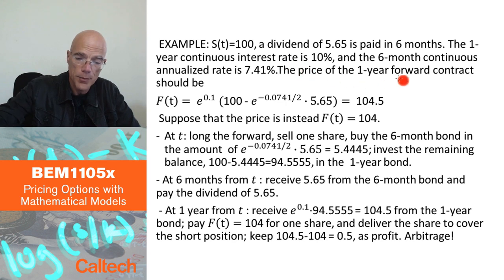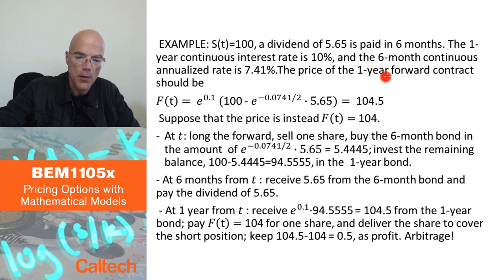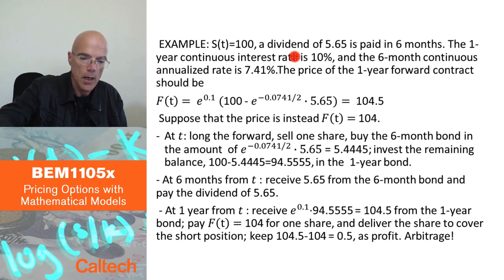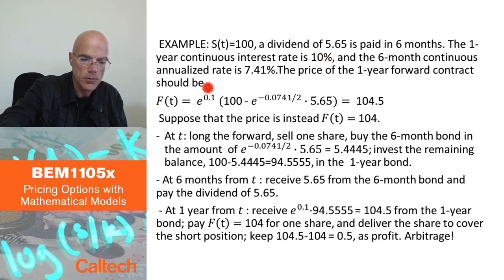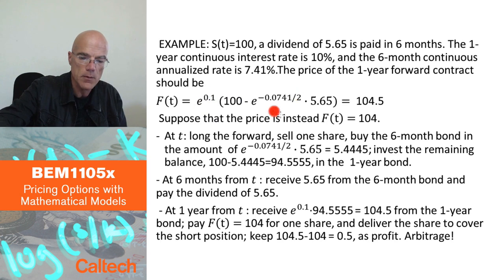We can compute, using the formula from the previous slide, what the price of the one-year forward contract should be on this stock. I have to multiply by the one-year factor — how much $1 will be in one year. By my assumption, it's a 10% interest rate, so it's e to the 0.1. And then I have the stock price minus the present value of the dividends.